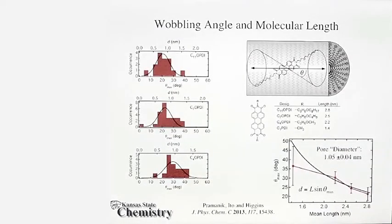In a final set of studies, we investigated the orientational wobbling motions of four different perylene diimide dyes of different lengths. These dye molecules are shown here, and their lengths span the range from 1.4 nanometers up to 2.8 nanometers. In all four cases, the wobbling motions of these dyes were found to be highly confined.